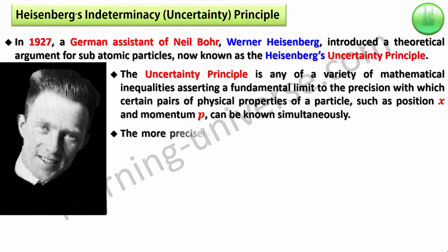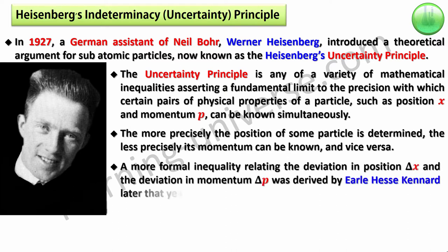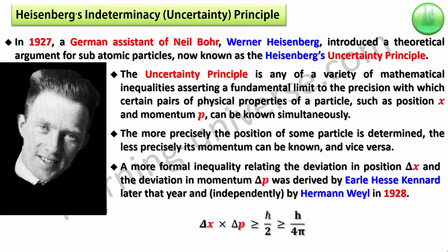The more precisely the position of some particle is determined, the less precisely its momentum can be known and vice versa. A more formal inequality relating the deviation in position delta X and the deviation in momentum delta P was derived by Earle Kennard later that year and independently by Hermann Weyl in 1928. The inequality suggested was delta X times delta P is greater than or equal to h-bar by 2 or H over 4π. H-bar is basically H by 2π, which is very often used.